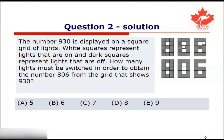Now let's see how many lights have we turned on or off in this process. We have turned this light off, this light off, this light off, this light on, this light on, and this light off. And we can see that altogether, we have either turned on or off six lights.